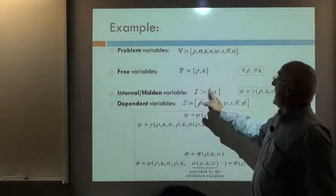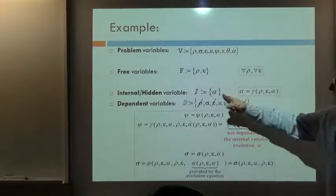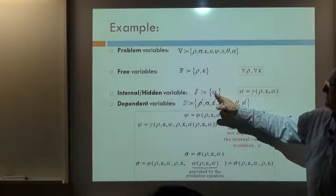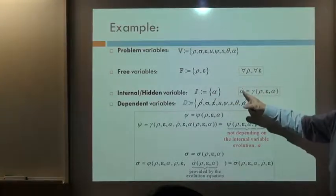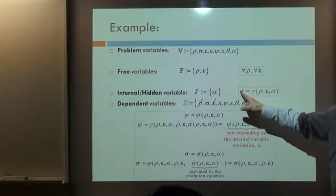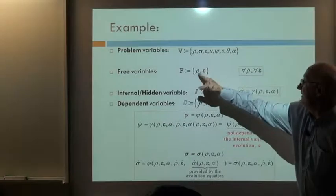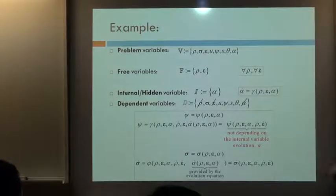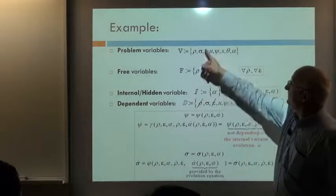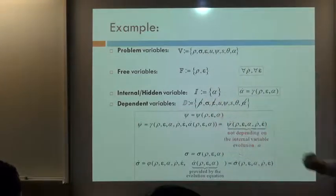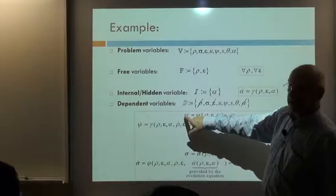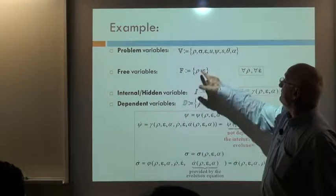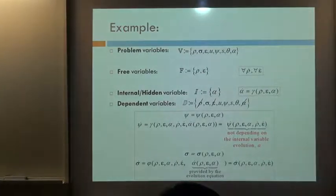Now I take one internal variable alpha. As soon as I introduce an internal variable, I must define an evolution equation: alpha dot depends on the instantaneous values of the free variables and the instantaneous value of the internal variable itself. That's the evolution equation. The remaining variables — the total set minus rho, epsilon, and alpha — are the dependent variables. This means, for instance, that the free energy can be expressed in terms of rho, epsilon, and alpha.